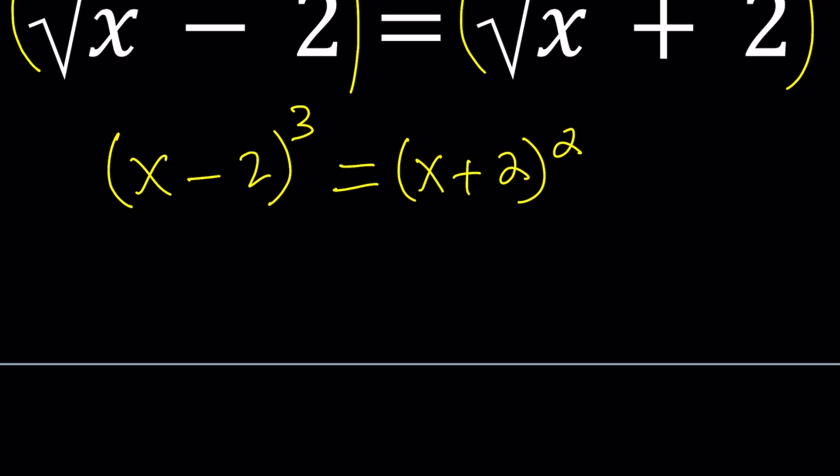I mean, this is going to be x cubed, and then for this, you can use several different formulas. I like the shortcuts, but you could also use the binomial theorem. x cubed minus 3x squared times 2 plus 3 times x times 2 squared, which is 4 minus 2 cubed. And then on the right-hand side, we get x squared plus 4x plus 4.